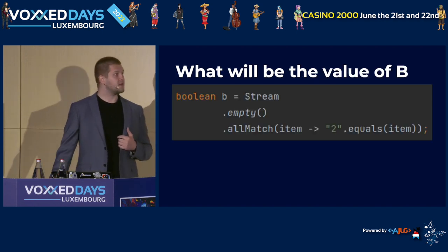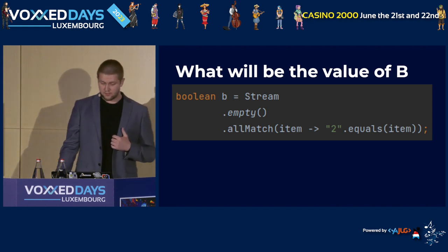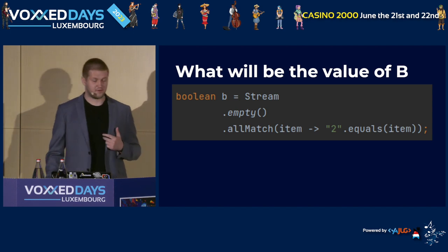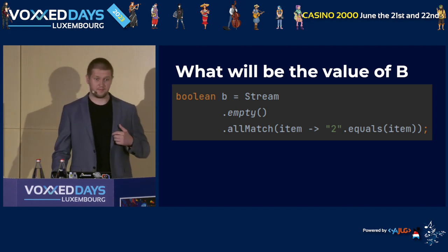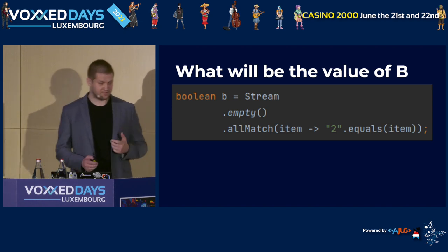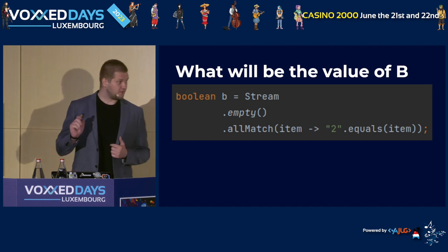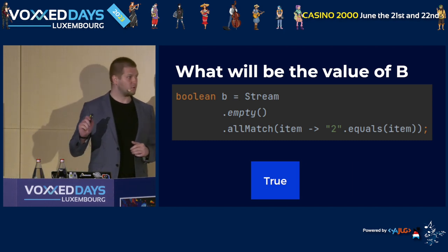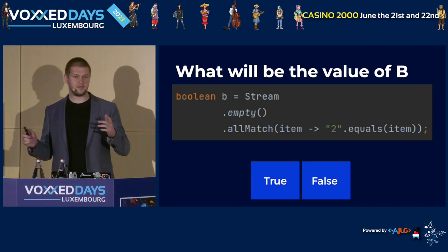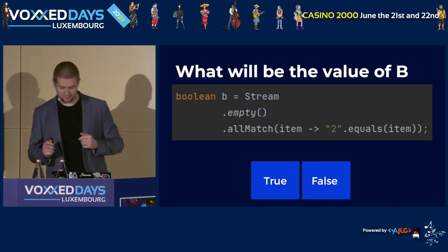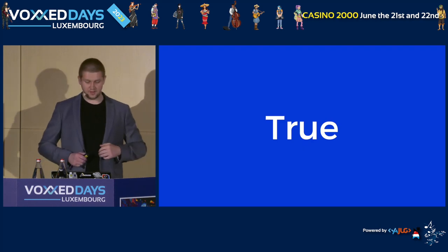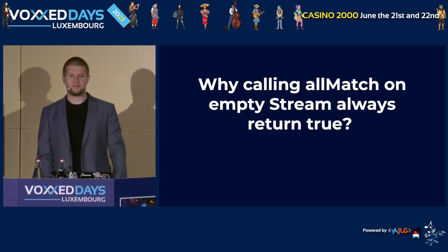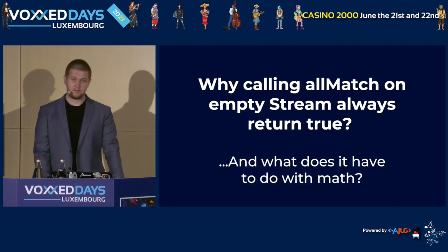Before we move forward, I have one more question for you. What do you think will be the value of B? If you read the description of my talk, that's probably a fairly simple question. If not, please, no cheating — no reading the description. Just try to answer the question the best you can. The correct value is true. But why? Why does calling allMatch on an empty stream always return true? And what does it have to do with math?